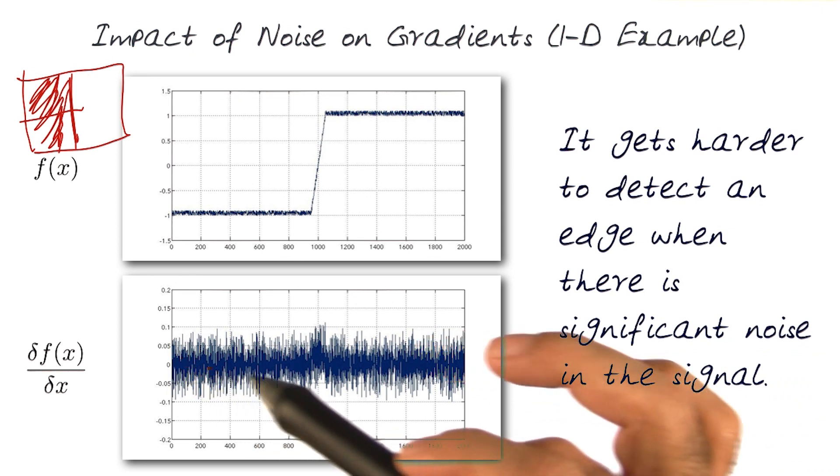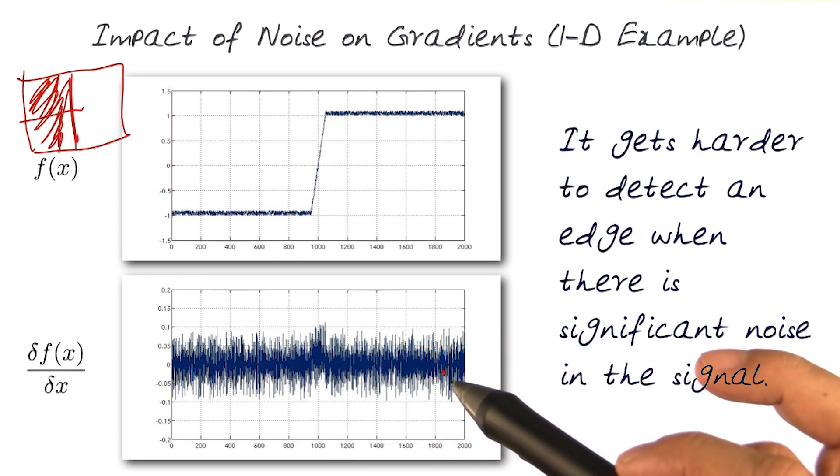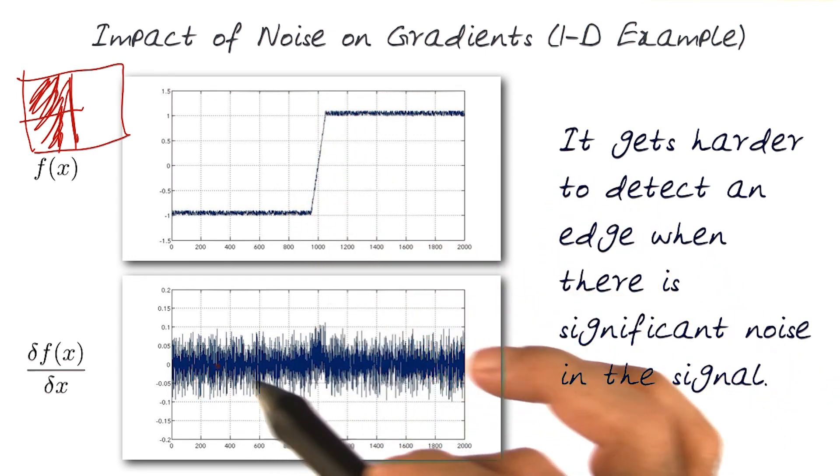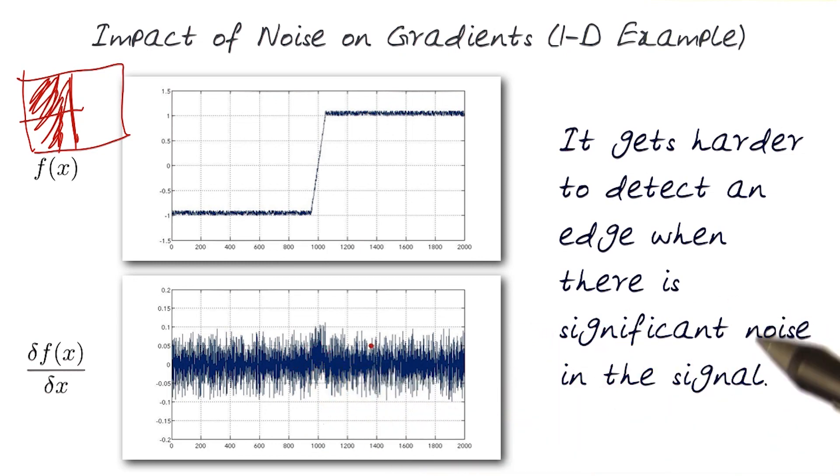And in fact, by looking at this, you can imagine that it would be hard to actually look for a sudden change in gradient, just because it's mostly capturing the noise. So in essence, it really gets harder to detect an edge when there is significant noise in the signal, something we will have to start thinking about how we can avoid.